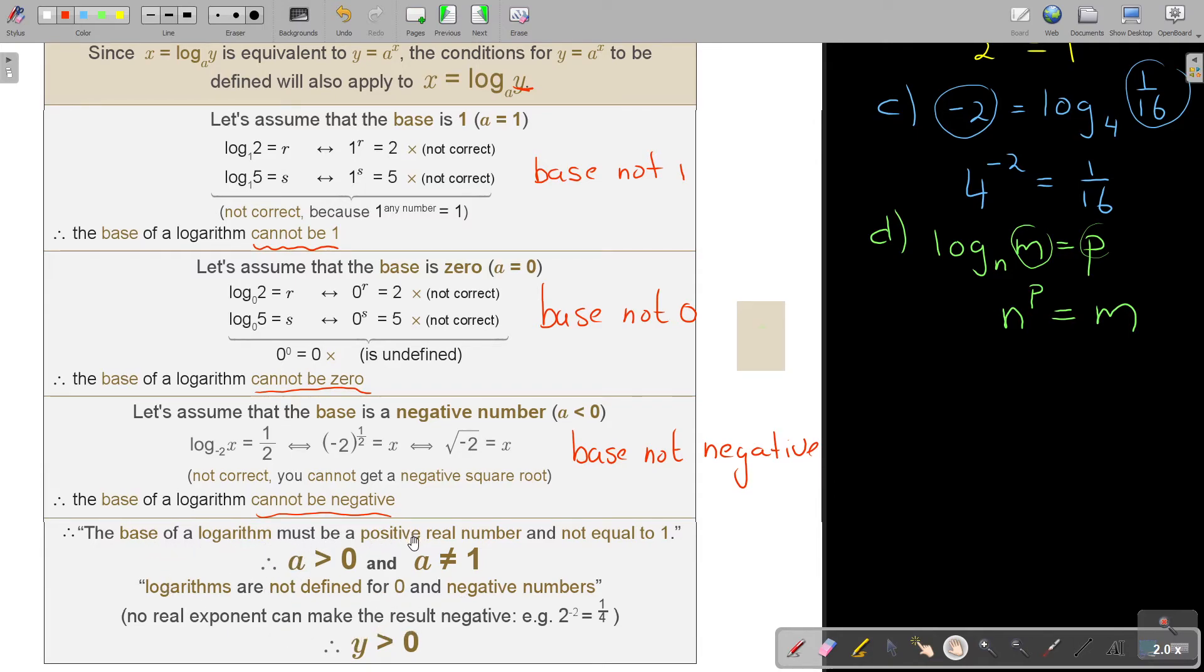The base of a logarithm must be a positive real number and not equal to 1. Logarithms are not defined for 0 and negative numbers. No real exponent can make the result negative. So that value of y will also be bigger than 0. So it was all about the base. So the base must be bigger than 0. It cannot be 0. It cannot be 1.